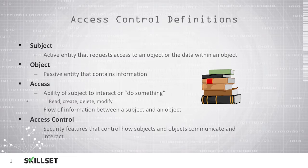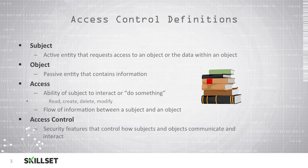A subject is an active entity that requests resources or access to an object or the data that an object contains. An object is a passive entity that contains information that a subject is interested in accessing. Access is the ability of the subject to perform some type of interaction with objects.